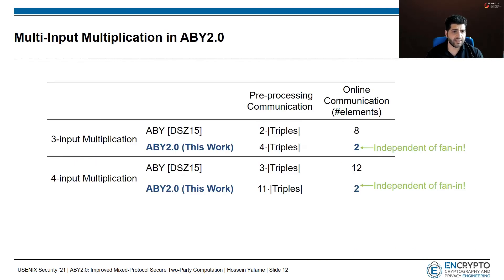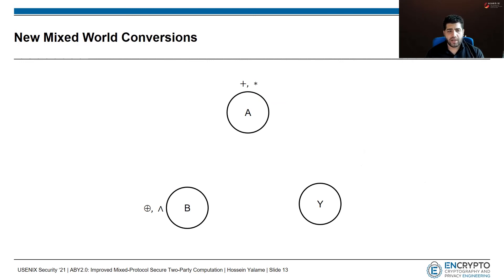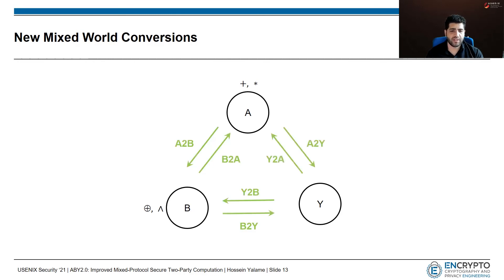We also extend our two-input to multi-input multiplication. For the first time in the literature, we have the online communication independent of the fan-in of the gates. For example, for a four-input multiplication, we just need two elements in the online phase, but in ABY we need 12 elements. In ABY2, we present conversion protocols to switch between different protocols, and our protocols are more efficient than the conversions in ABY. As shown in the slides, our online communication and rounds are better than ABY.